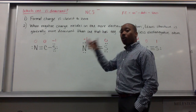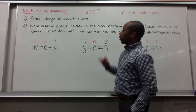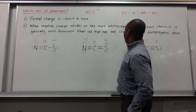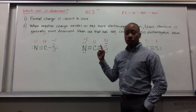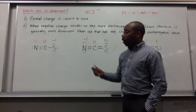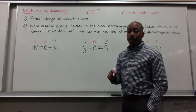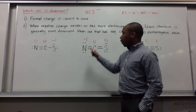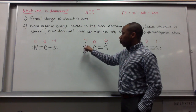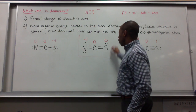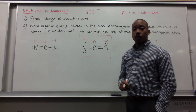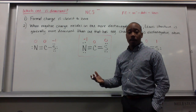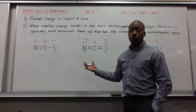Now, which one of these is the most dominant? We look at the second rule: when negative charge resides on the more electronegative atom, the Lewis structure is generally more dominant. Of these three atoms, the most electronegative is nitrogen. The negative charge resides on nitrogen in the first structure, so that is the most dominant Lewis structure. That's how we decide which one to draw.